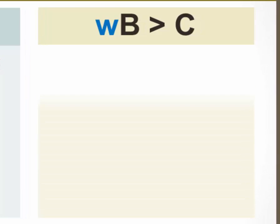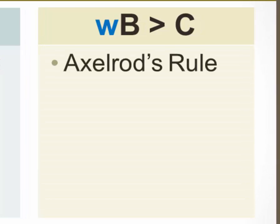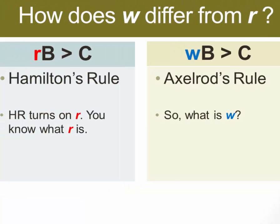Axelrod's Rule, then, we're going to say is W times B must be greater than C. And what we don't know at this point is what W means. So this is our first question that we have to answer. What is W?